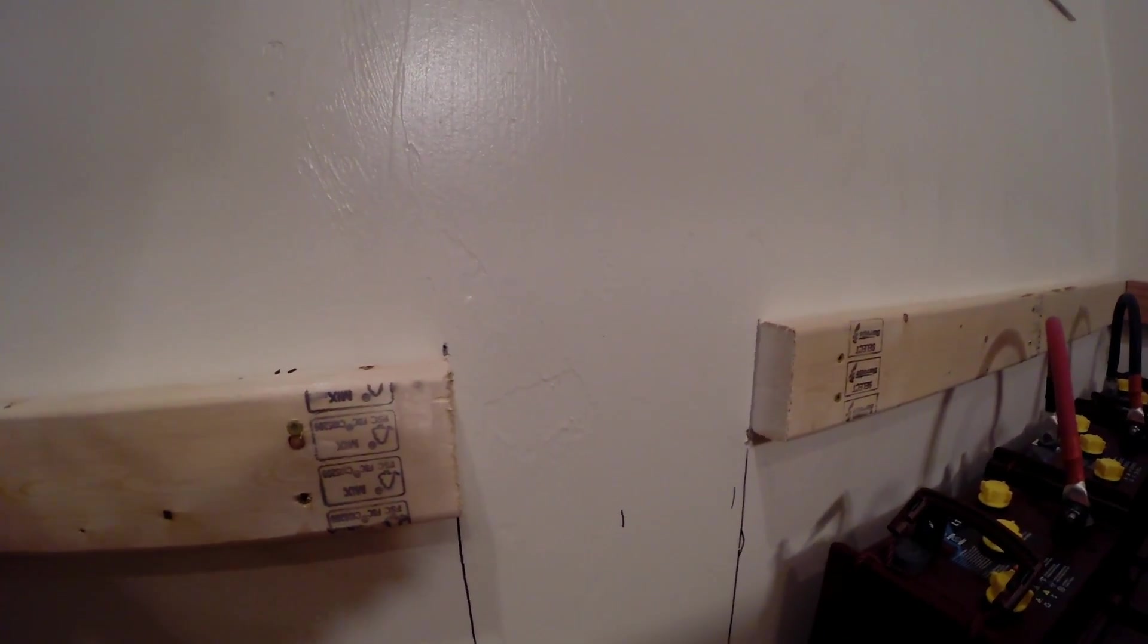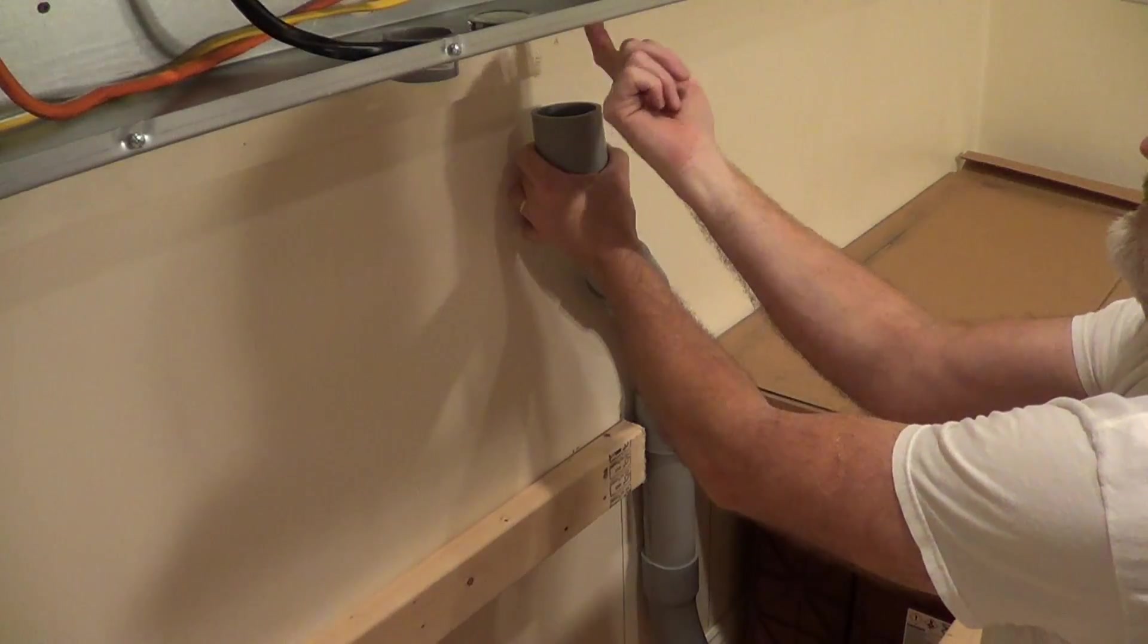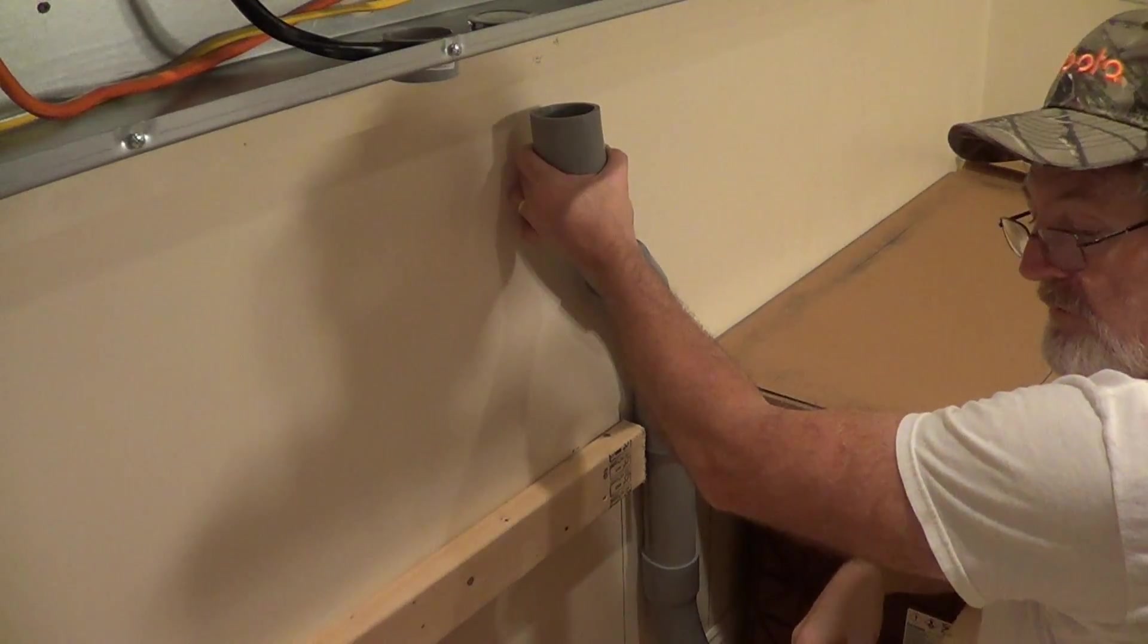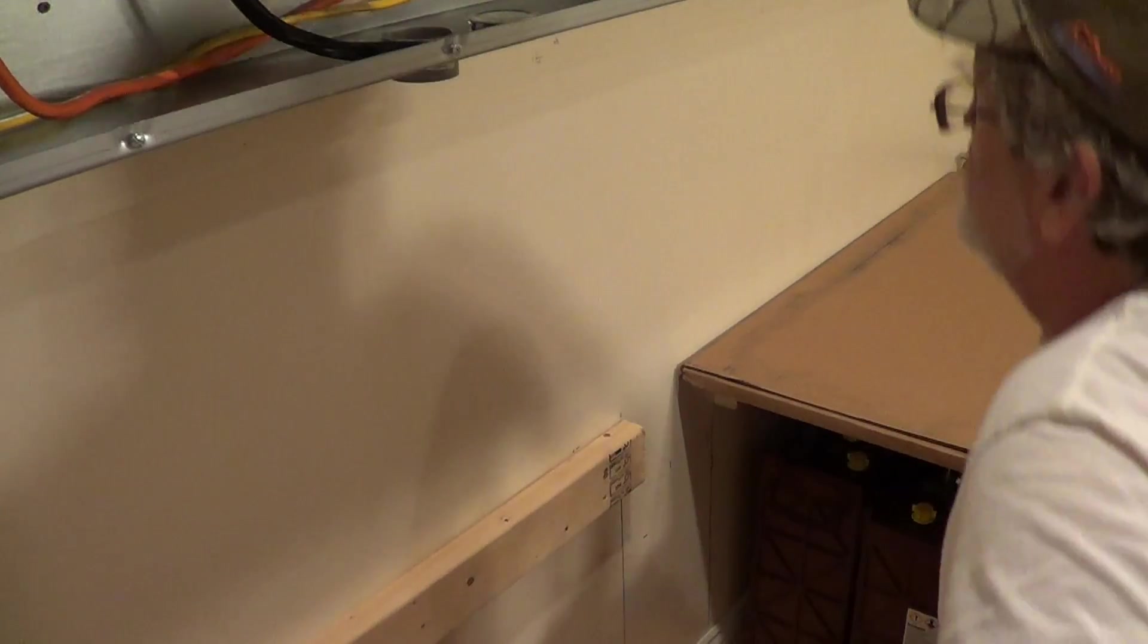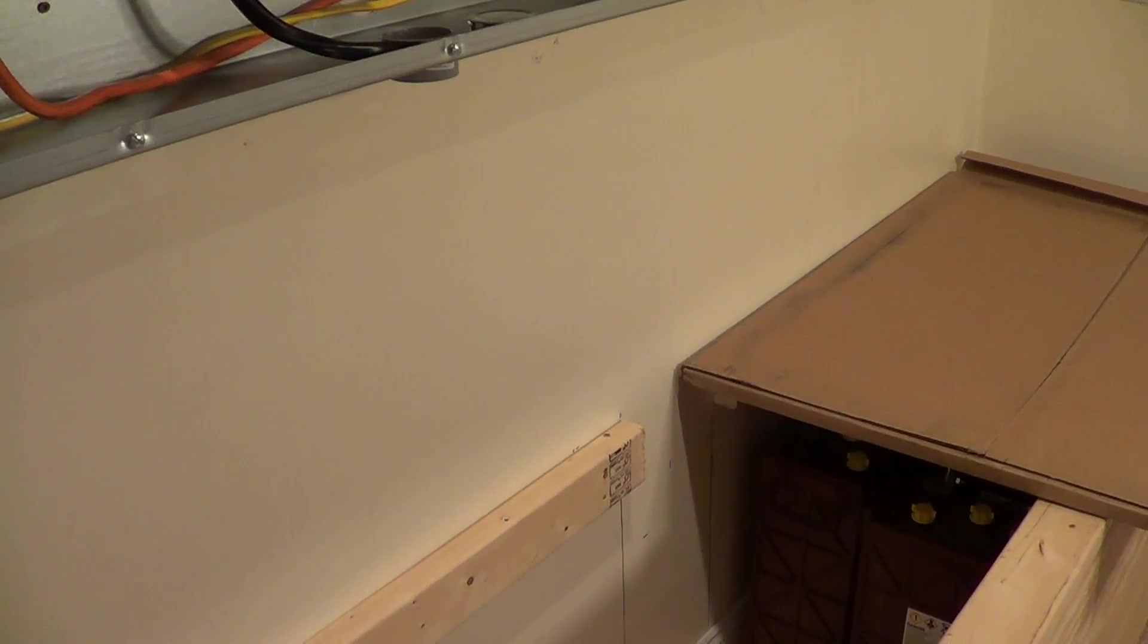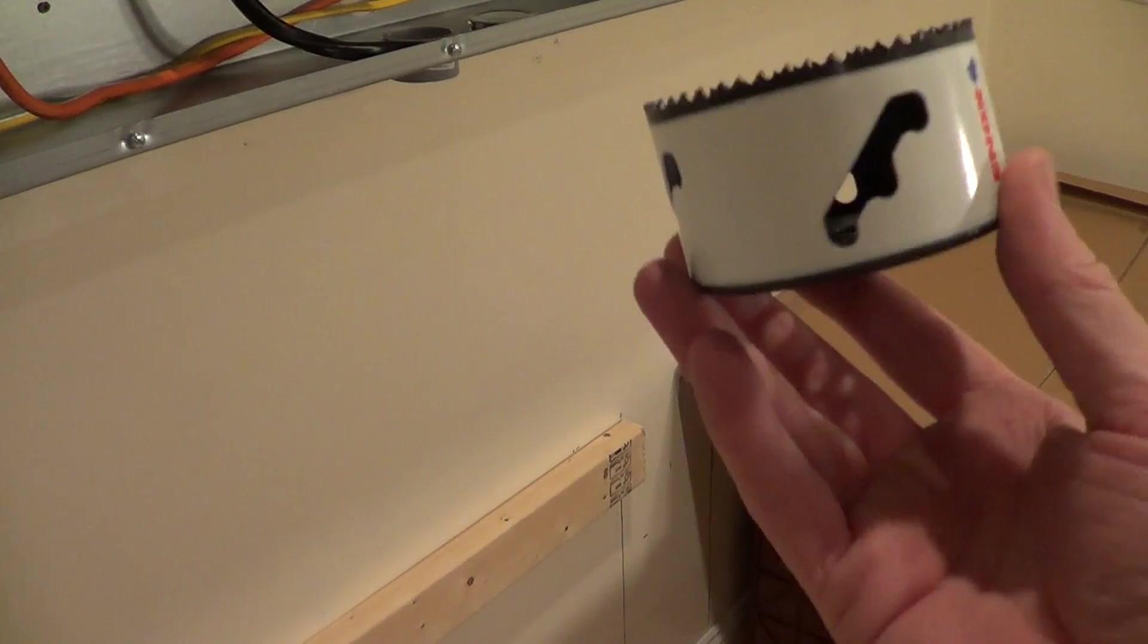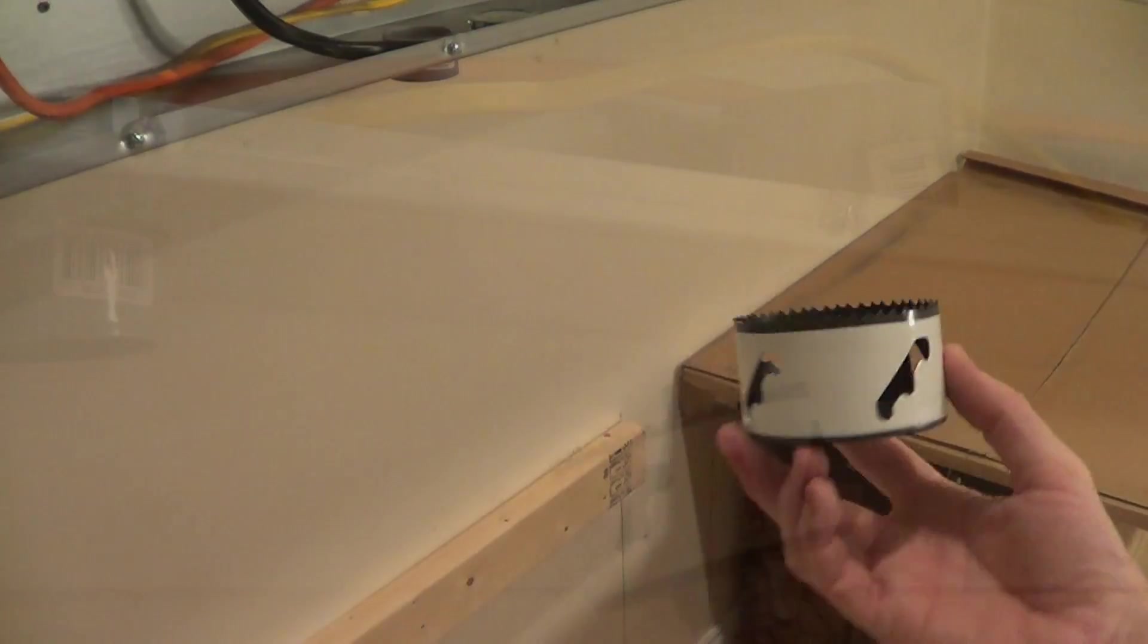I took it out with a jigsaw in case you're wondering. Next step is I got to cut through this. I don't have a die that big, so I'm going to try and cut it with a metal cutting hole saw, but I'm not sure how that's going to go.